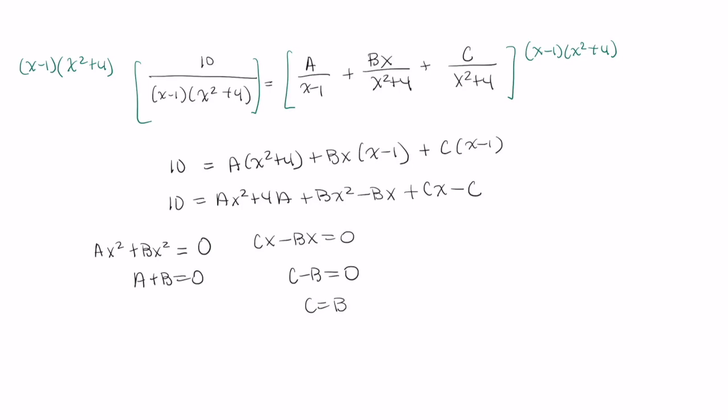And now, finally, our constant term. I have a negative 10 here. I have a 4A and I have a negative C. This tells me that 10 is equal to 4A minus C.